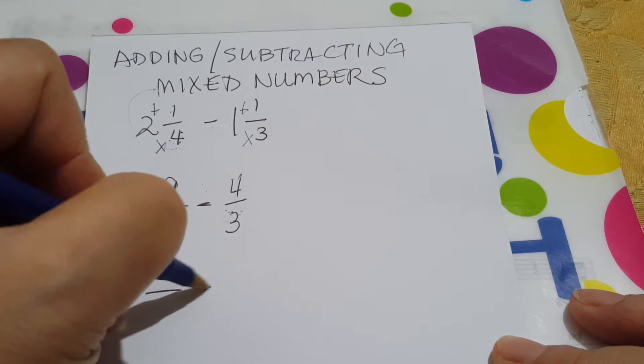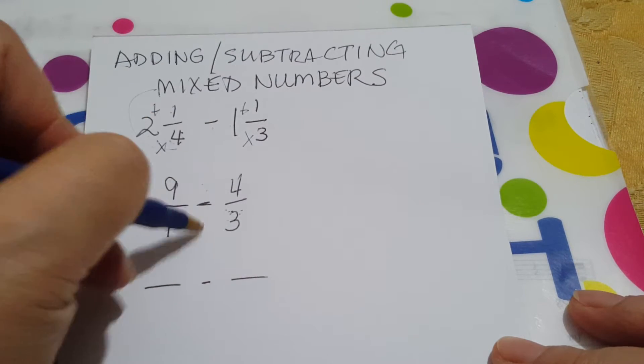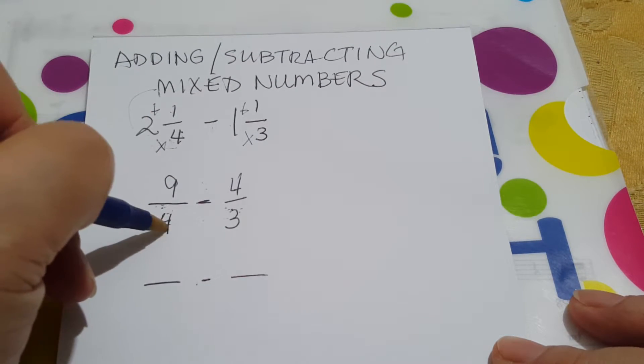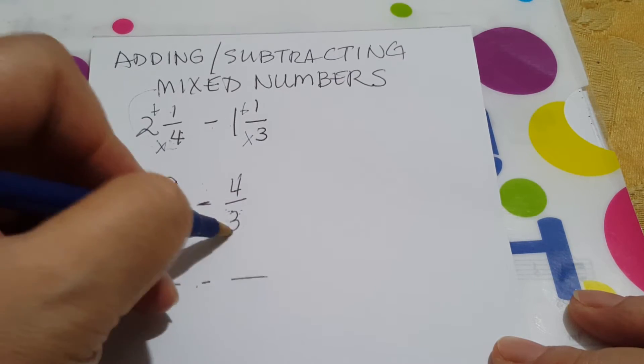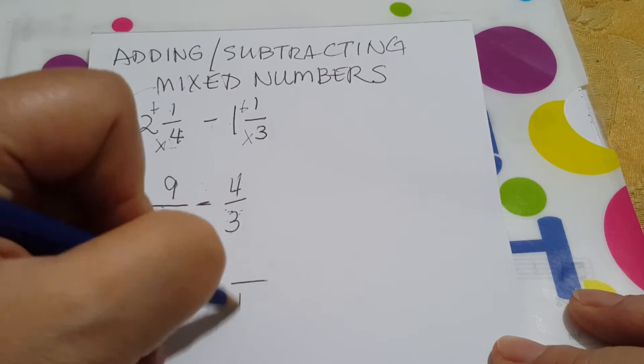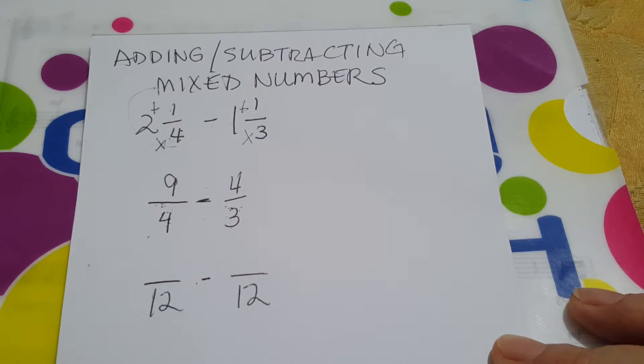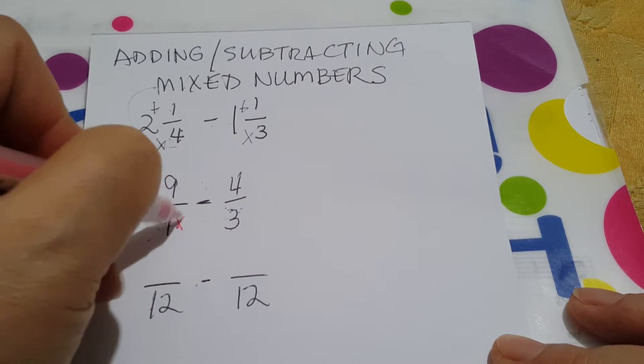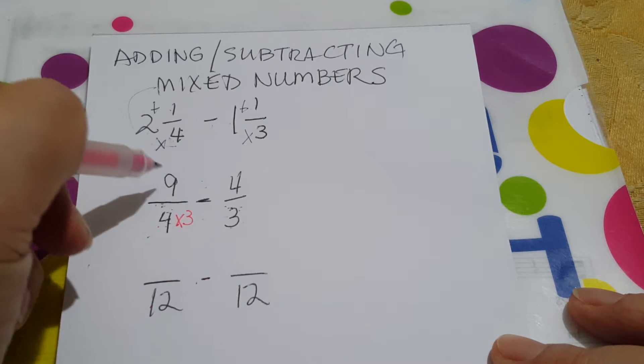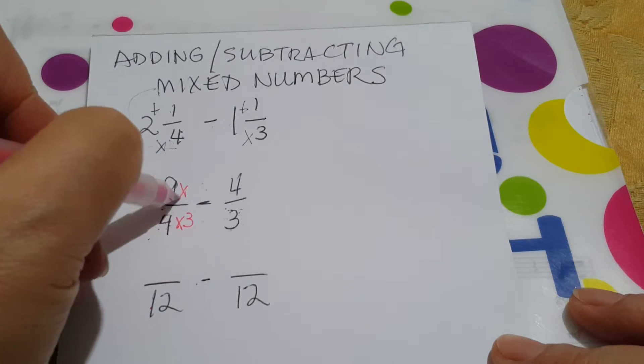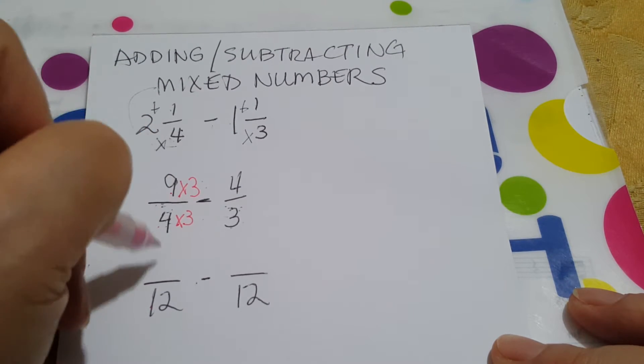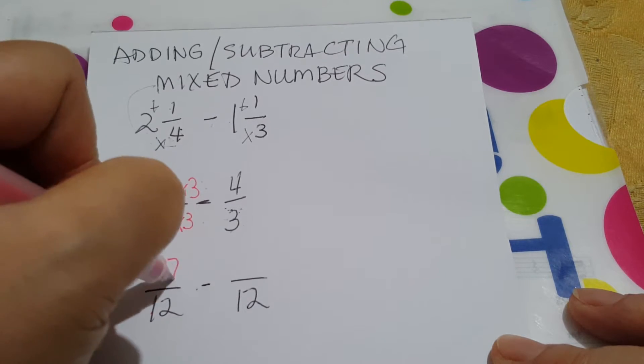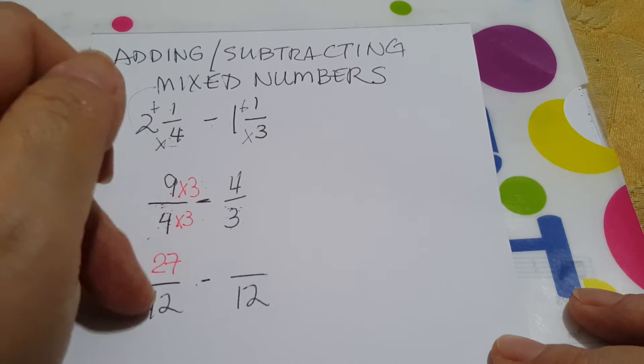So make sure to copy the operation properly. So our new denominator would be 4 times 3, 12. Again, ask yourself, how did 4 become 12? We multiplied it by 3. So you should do the same with your numerator. Now you have an equivalent fraction.